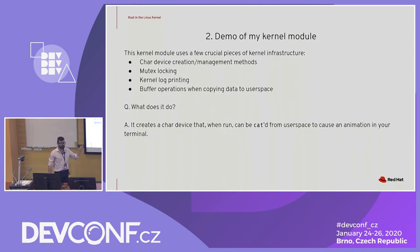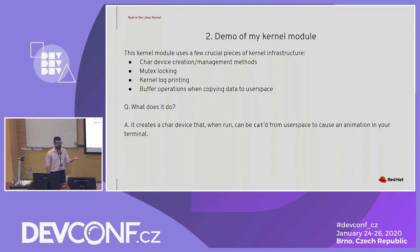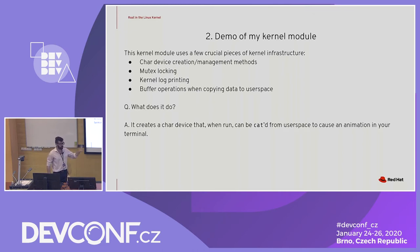Now a demo of my kernel module. It's a bit silly but does some important things: char device creation using the kernel API, mutex locking, printing to kernel logs, and buffer operations that encode length — so no buffer overflows. Essentially it creates an animation: when you cat the device node, it displays an animation.